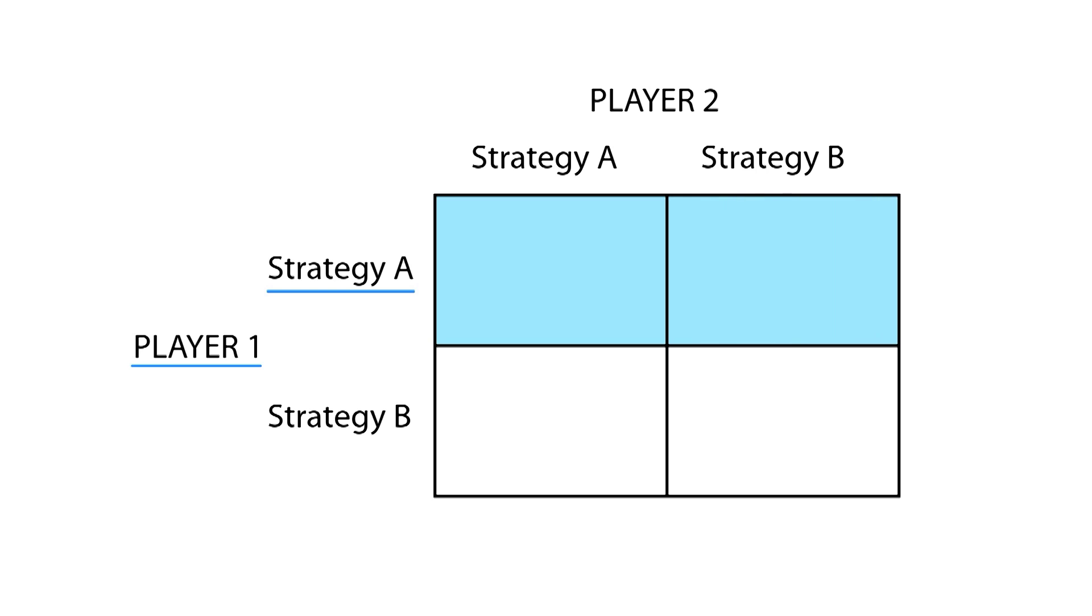Next, we analyze the second player. Let's say player 2 also chooses strategy A. Again, we only have to consider the cells of strategy A. The cell where both chosen strategies overlap is the one we must analyze.